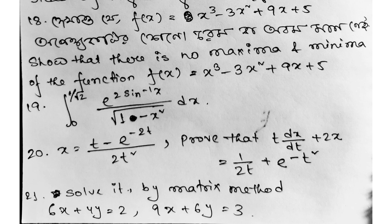Next question: integration limit 0 to 1 by root 2, e to the power 2 sin inverse x divided by root over 1 minus x square dx. Another question: x equals t minus e to the power minus 2t divided by 2t square, prove that t dx dt plus 2x equals 1 by 2t plus e to the power minus t square. Then solve it by matrix method: 6x plus 4y equals 2 and 9x plus 6y equals 3.